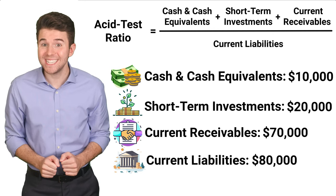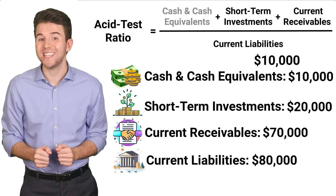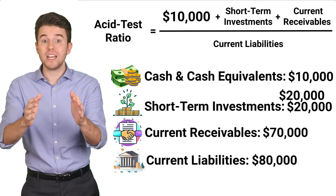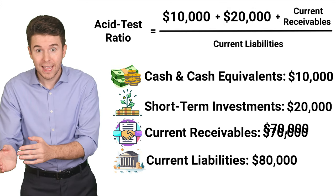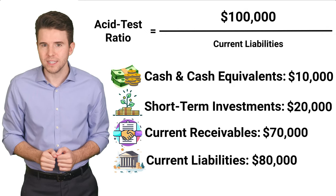Now, to compute the acid test ratio, we first add up the cash and cash equivalents of 10,000, short-term investments of 20,000, and current receivables of 70,000, to get us 100,000.